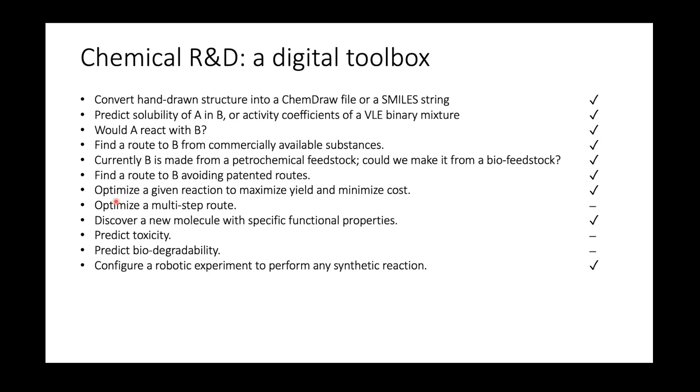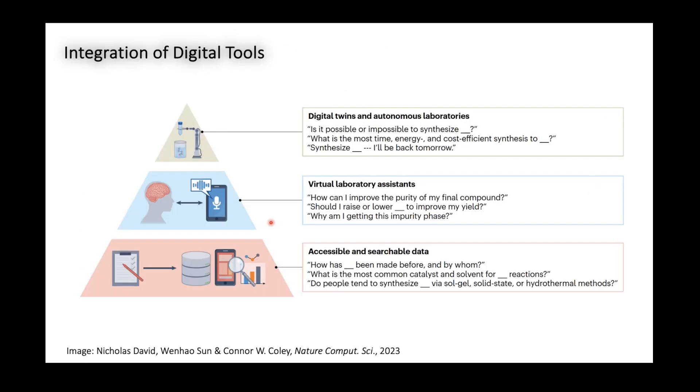There are some things which are still very difficult. If you want to optimize a multi-step sequence of reaction separations, that is still an unsolved problem. There are a few papers appearing on this, but it isn't solved. Predicting toxicity is not solved, biodegradability is also very difficult. But for example, discovering molecules with specific functional properties is actually coming available. There are more and more publications coming up with really decent accuracy models which do that. And there are multiple startup companies who are exploiting this new functionality.